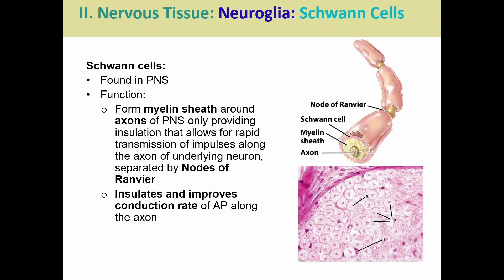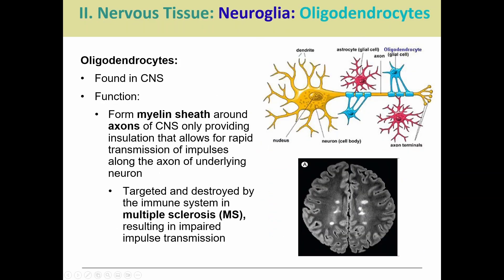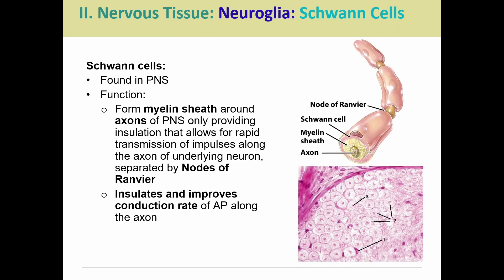The last one is Schwann cells. These are found only in the peripheral nervous system, and they help form the myelin sheath around the axons in the peripheral nervous system — the same job as oligodendrocytes, just these ones are peripheral while oligodendrocytes are central. If we compare the two, they look different. Schwann cells are wrapped all the way around the axon, kind of like a tortilla wrapped around a burrito. Our oligodendrocytes, shown here in blue, have a very different appearance. They're technically not the same cells, which is why we use different names even though they have the same function.